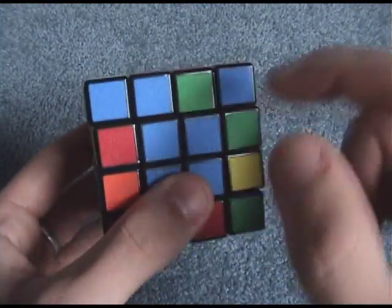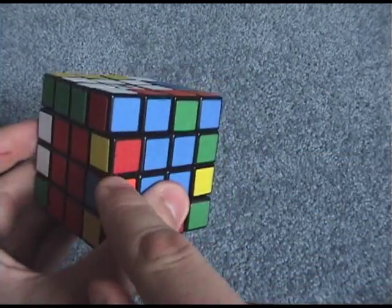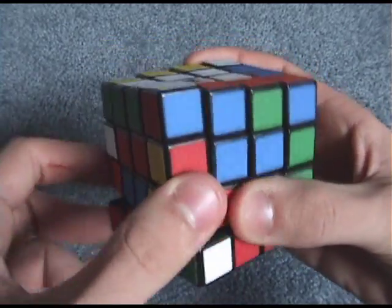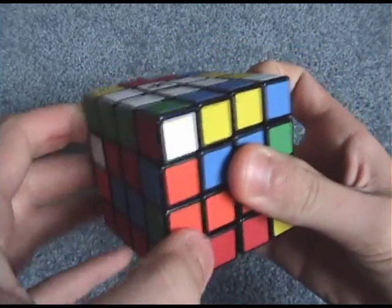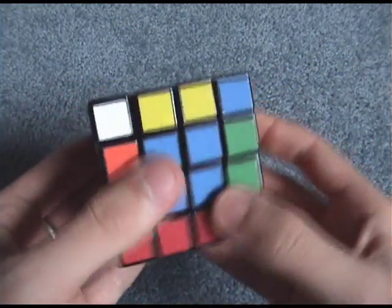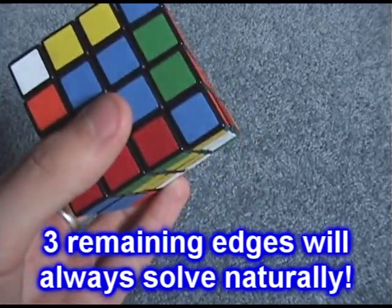And I'll show you exactly what I mean in a second. All the edges are paired up except these three. So I'm going to move this piece to here, and then I have the green and orange one here. And it will solve. Any time you have three edges left, it will solve itself.